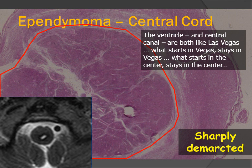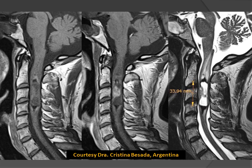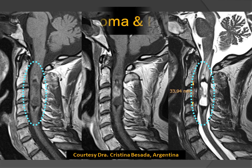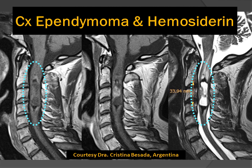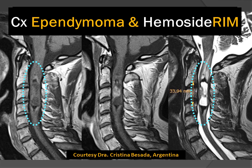The ventricle and the central canal of the spinal cord are like Las Vegas — what starts in Vegas stays in Vegas. What starts in the central canal or in the ventricles tends to stay within the ventricles and in the central canal. Here is a third example of a cervical spinal cord ependymoma, and once again we see a centrally located lesion with hypointensity at the top and bottom caused by hemosiderin from the microvascular change — a classic appearance for a cervical spinal cord ependymoma.